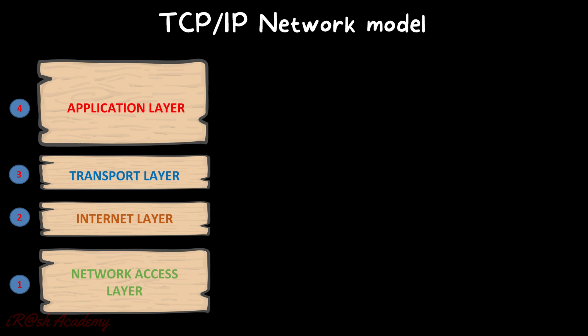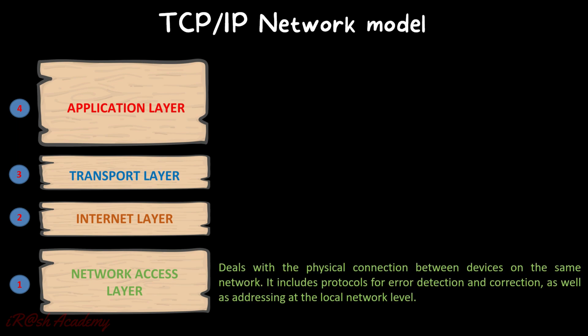First, the Network Access Layer — Layer 1. Layer 1 mainly deals with the physical connections between devices on the same network. It includes protocols for error detection and correction as well as addressing at the local network level. The physical connection refers to the type of connectivity, whether it is a network cable or serial connection. It also deals with the physical address of devices, i.e., the MAC address, and manages the error detection and correction process in the network.